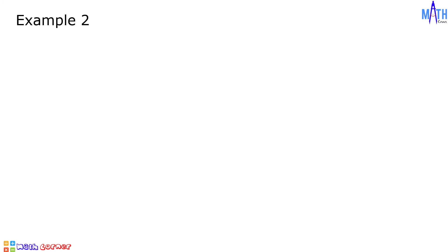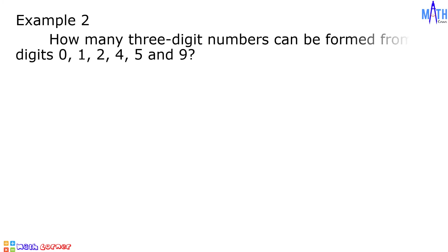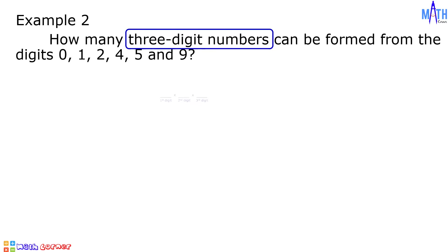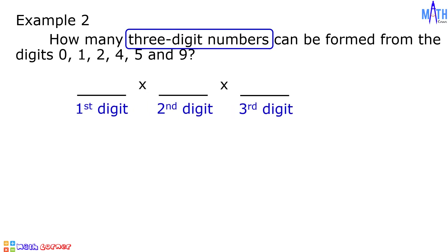Example number two: how many three-digit numbers can be formed from the digits 0, 1, 2, 4, 5, and 9? In this example, there are three independent events: first digit, second digit, and third digit.